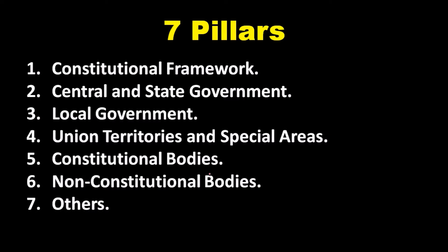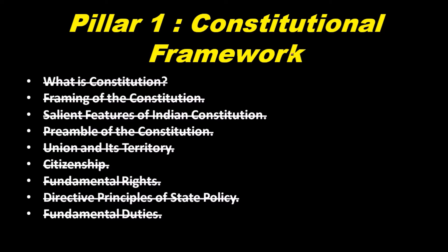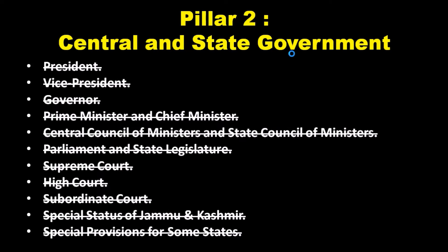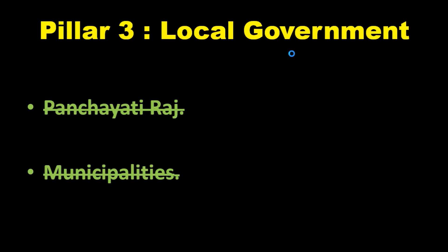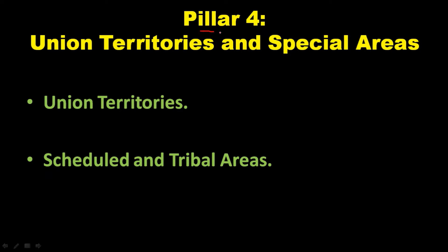I have told you that there were 7 pillars. The first, second, and third pillars I have already completed. Pillar 4 was Union Territories, Schedule and Tribal Area, and I have completed these two.